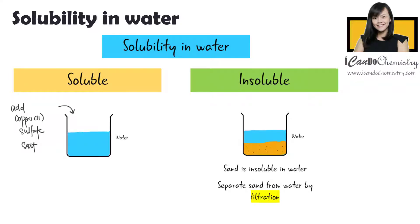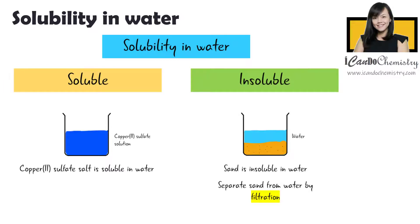When copper-2-sulfate is added into water, it dissolves to form a blue solution. We say that copper-2-sulfate is soluble in water. When a salt is soluble in water, we cannot simply filter to separate the solute from the solvent. We will have to carry out crystallization.